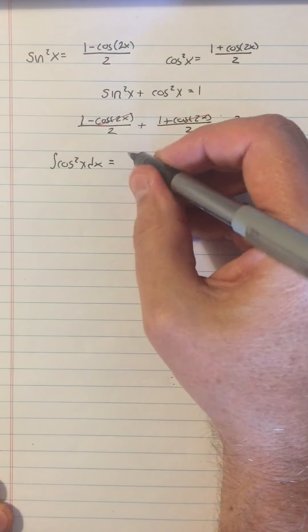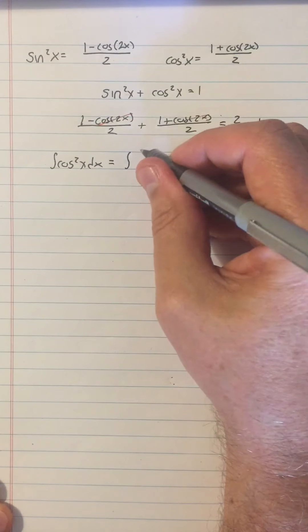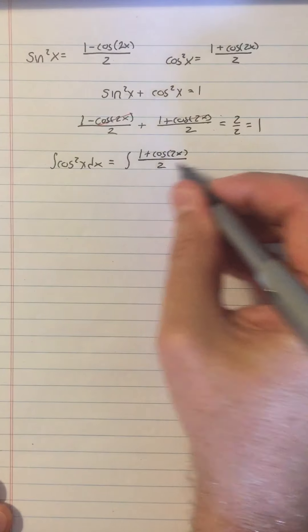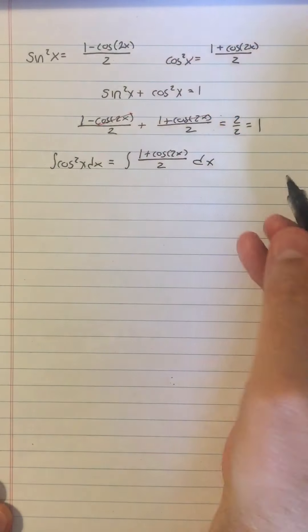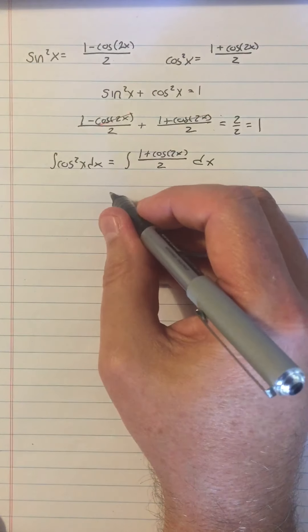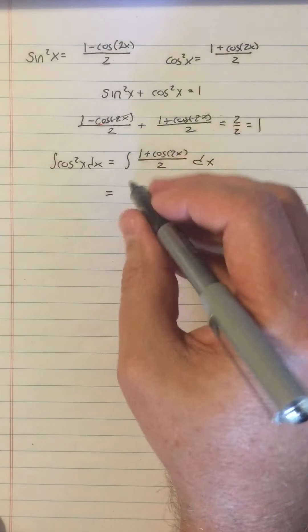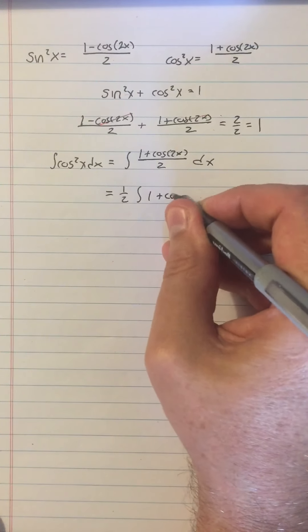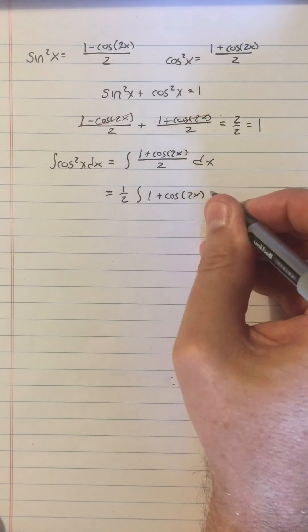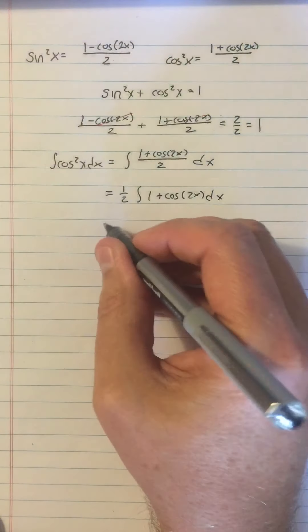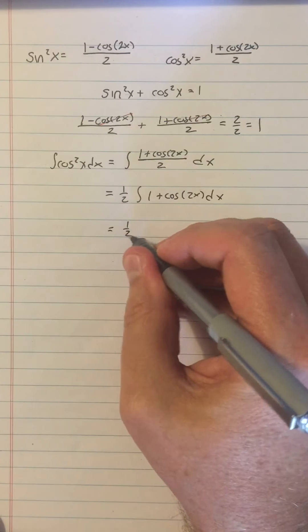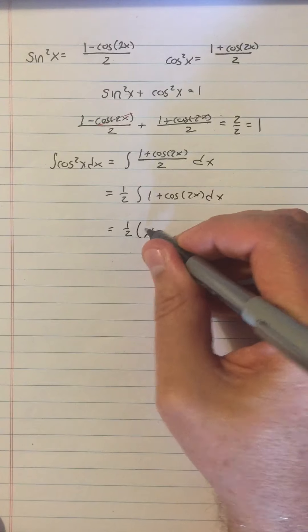That's like really sort of a core idea of mathematics, is how can we shift and transform things that we don't know something about into something that we do know something about. All right, so that's how that looks. I have found, not all books do this, I've found that it's usually useful to factor out the one half. It just makes everything easier to write. And then you can just do the antiderivative right away there. You can do one half of the integral of one is x.